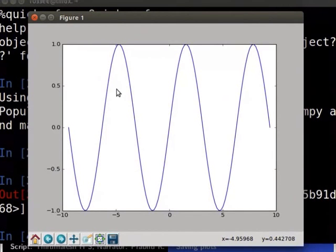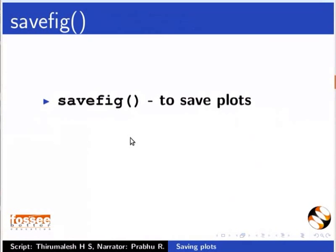Don't close the plot window for the rest of the tutorial. Here you can see that we have made a very basic sine plot. Now let us see how to save the plot. For saving the plot, we will use the savefig function.